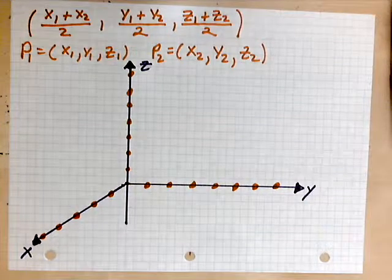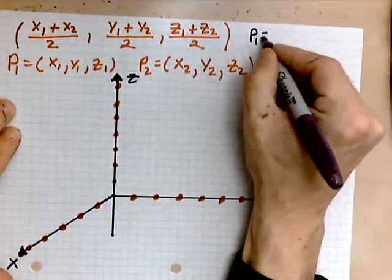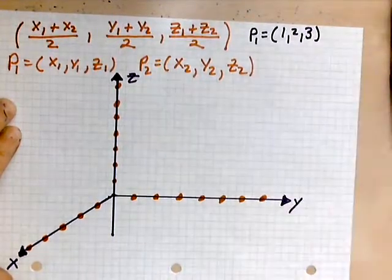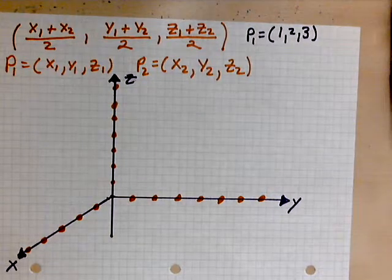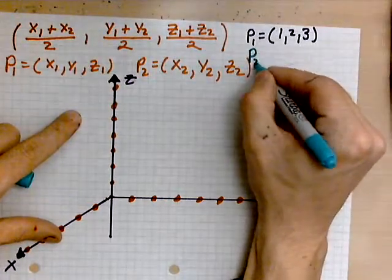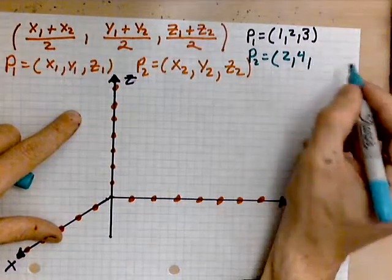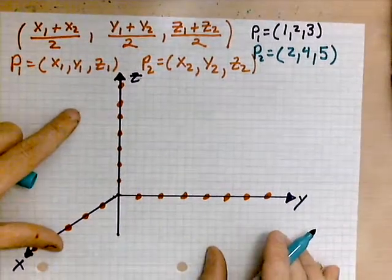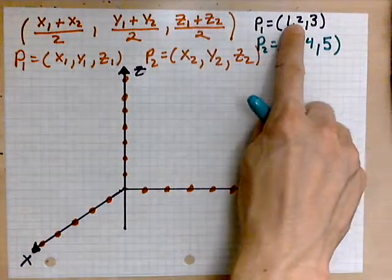Now let's introduce a specific point and another specific point. So say P1 is (1, 2, 3). And P2, which I will write in the light blue here, I love this color, that is (2, 4, 5). So what we want to do now is find the coordinates of the midpoint of the segment joining these two.